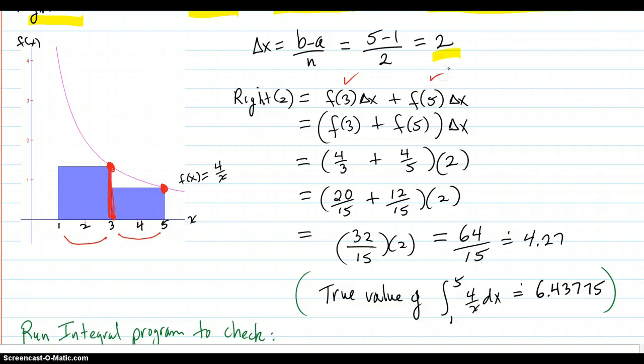And that will give you the right rectangle sum. So f of 3 plus f of 5 with the delta x factored out. And the function, of course, is 4 over x. So 4 over 3 plus 4 over 5. And then I'll compute to 64 fifteenths, which is approximately 4.27.